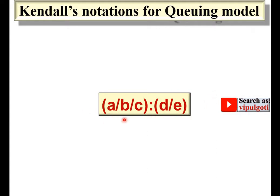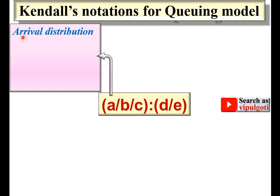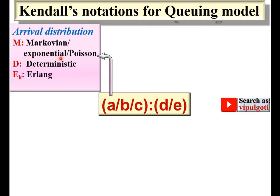This is the Kendall notation. Now we will see each term one by one. Starting from the first term A, which represents arrival distribution. The arrival pattern can have different distributions: M represents Markovian, exponential, or Poisson distribution; D represents deterministic distribution; Ek represents Erlang distribution with k factor; and G represents general distribution. Your arrival distribution can be any one of these four.